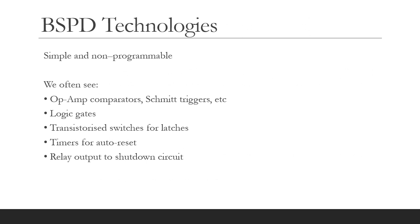Whilst I don't want to steer your design towards a particular solution, we often see operational amplifiers used as comparators and Schmitt triggers. We see logic gates to combine the brake and power signals. We see various transistor switches and timers. And typically we have a relay output — a volt-free contact which goes into the shutdown circuit.